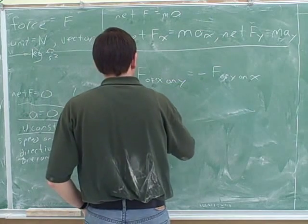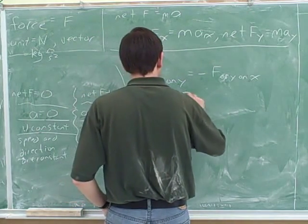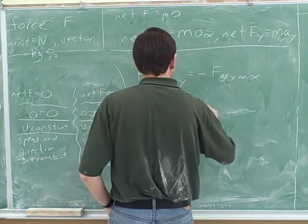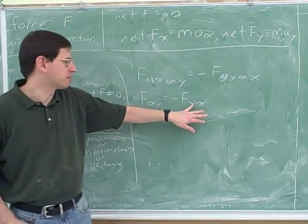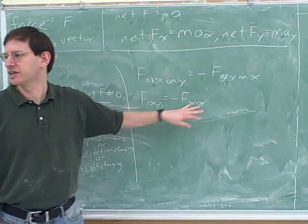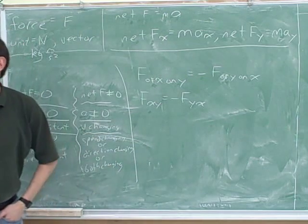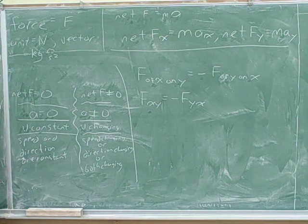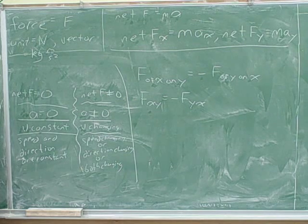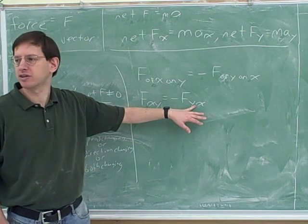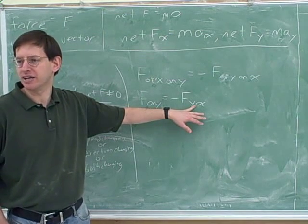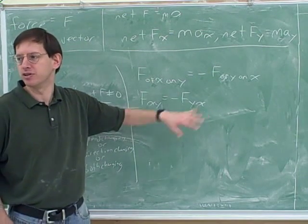So usually this would be written like this. People abbreviate the subscripts — this means the force of x on y, and this means the force of y on x. The key point from Newton's third law is that forces come in pairs. There's no such thing as a force by itself. Anytime x exerts a force on y, y must exert a force on x, equal in magnitude and opposite in direction.